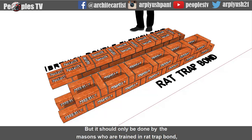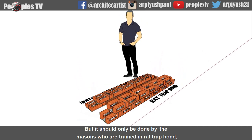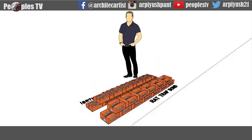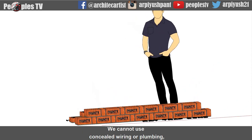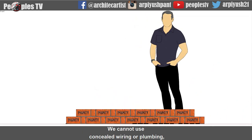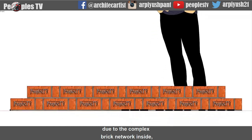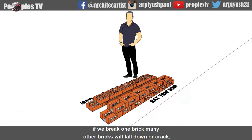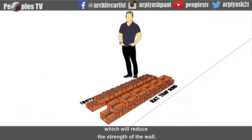However, rat trap bond should only be done by masons who are trained in it. Otherwise, there will be wastage of mortar falling into the gap while working. We cannot use concealed wiring or plumbing due to the complex brick network inside. If we break any one brick, many other bricks will fall down or crack, which will reduce the strength of the wall.